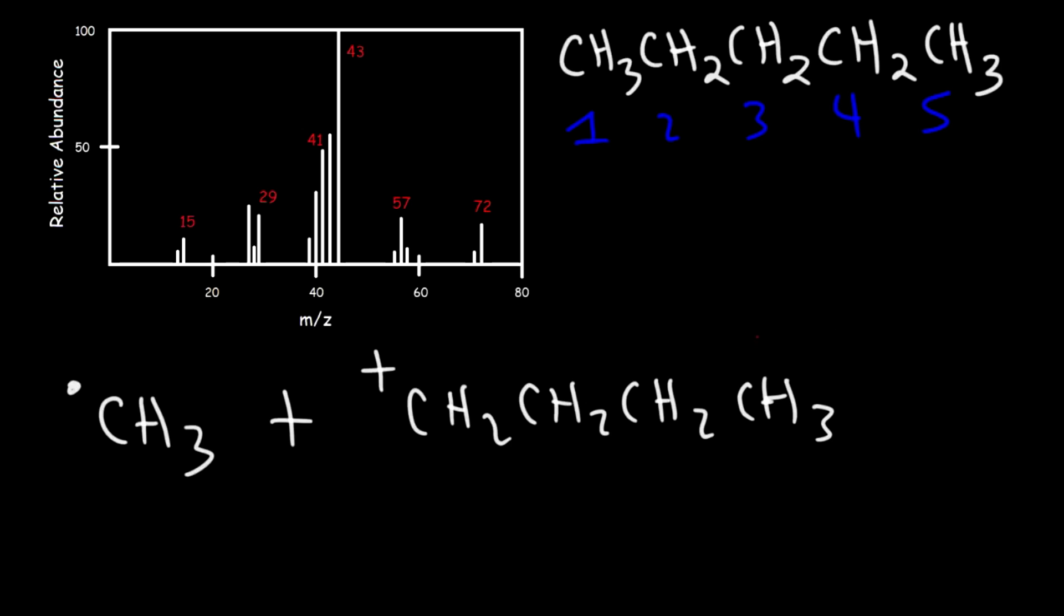Carbon has an atomic weight of 12 and hydrogen is about 1, so CH3 is 15, CH2 has an atomic weight of 14. If we add up 14 plus 14 plus 15 plus another 14, this will give us 57. So 57 could correspond to this particular fragment.